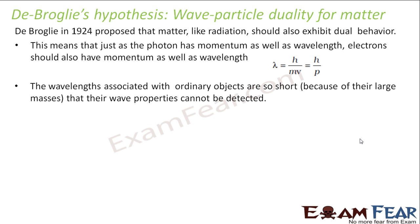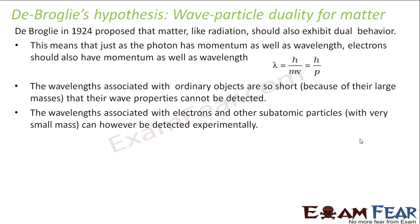The wavelengths associated with ordinary objects are so short because of their large masses that their wave properties cannot be detected. The wavelengths associated with electrons and other subatomic particles can, however, be detected experimentally because their masses are extremely small. For an electron, the mass is 9.1 × 10⁻³¹ kg, which is an extremely small mass. Therefore, the wavelength associated with the electron can be detected experimentally.